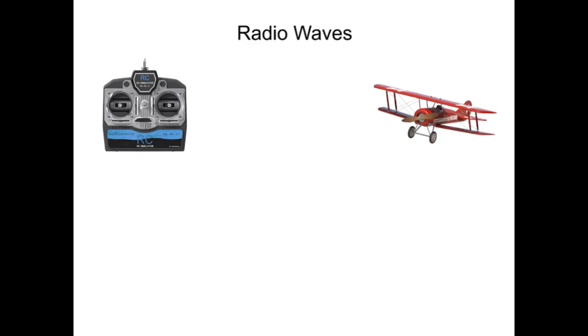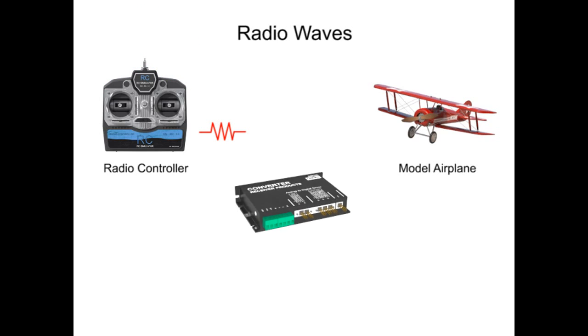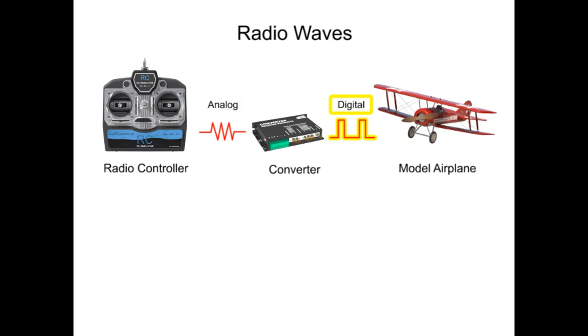The speed and flight pattern of a remote-controlled model airplane are determined by the joystick positions of a radio controller. Based on the position of the joystick, the controller emits radio wave activity at regular time intervals, lasting for a specific length of time. These radio wave pulses are transmitted to a receiver in the plane and converted from analog to digital pulses.